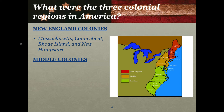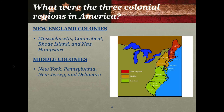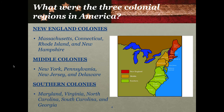The middle colonies consisted of New York, Pennsylvania, New Jersey, and Delaware — those are shown in orange on this map. And finally, the southern colonies consisted of Maryland, Virginia, North Carolina, South Carolina, and Georgia.